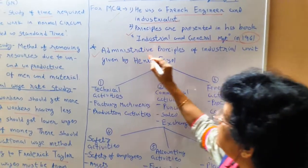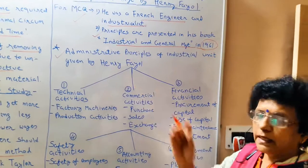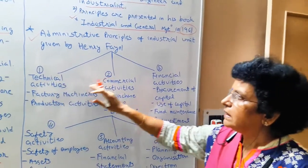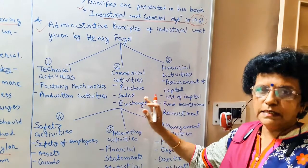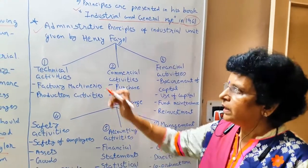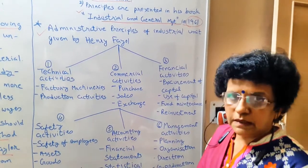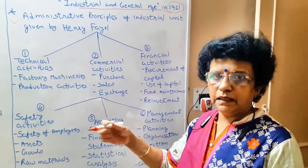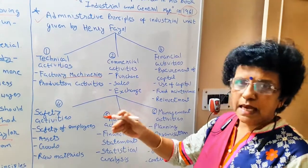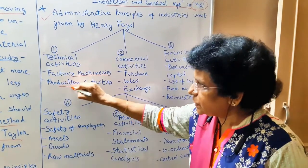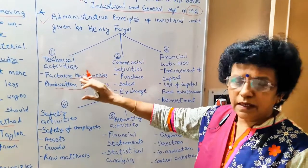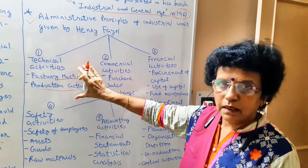Henry Fayol classified administrative principles of an industrial unit into six groups. Sometimes this is asked as a one-liner question. Group number one: technical activities. In an industry, technical activity is the most important — this includes factory, machineries and mechanism, production, plant and machinery maintenance and administration, and all factory-side requirements that are necessarily considered by management.